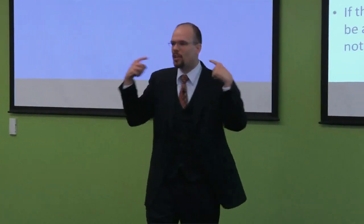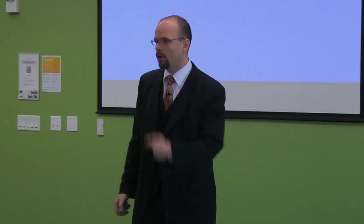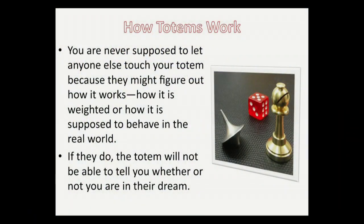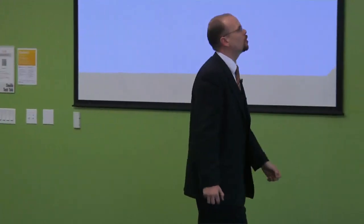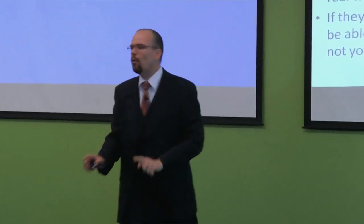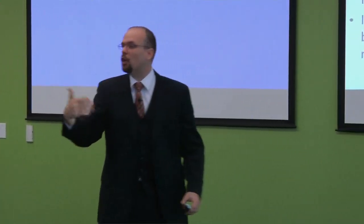We have to start out asking ourselves, how do totems work? Cobb's top is not the only totem in the movie. Arthur's got a totem, it's the die. Ariadne's got a totem, it's the bishop. You're never supposed to let anyone else see how your totem works. You're never supposed to let anyone else be able to touch your totem. Because if they do, they might feel how it's weighted in the real world.